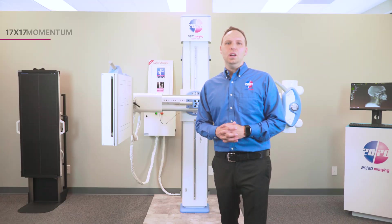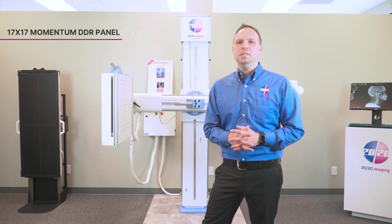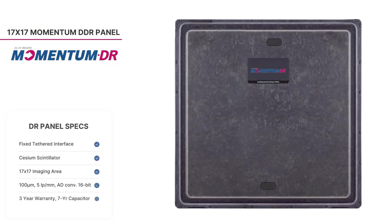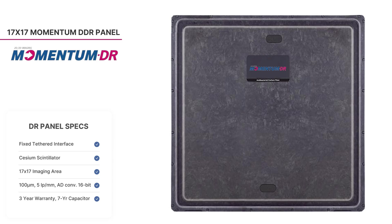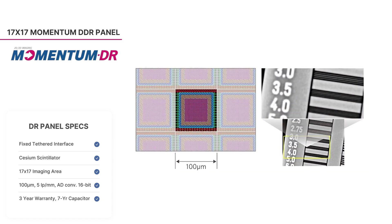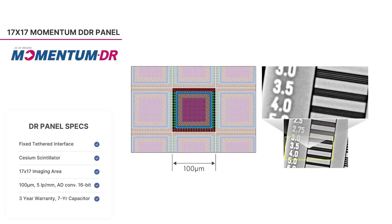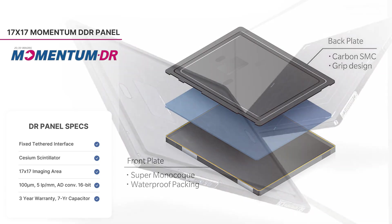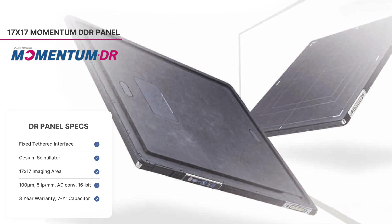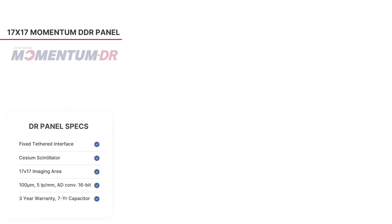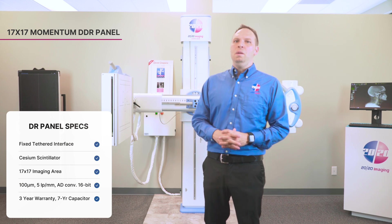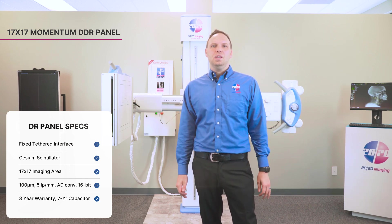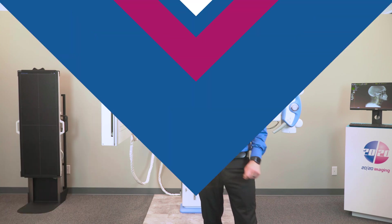The included Momentum DR detector is a high-performance cassette-size flat panel with a fixed tethered interface, developed and made exclusively by Konica Minolta. It boasts a 17 by 17 inch imaging area, delivering sharp images with a resolution of 100 micron and 5 line pairs per millimeter. The system's advanced capabilities are further enhanced by 16-bit AD conversion, ensuring precise and detailed image capture. This makes the Momentum DR detector an excellent choice for medical professionals seeking reliable and high-quality imaging solutions.